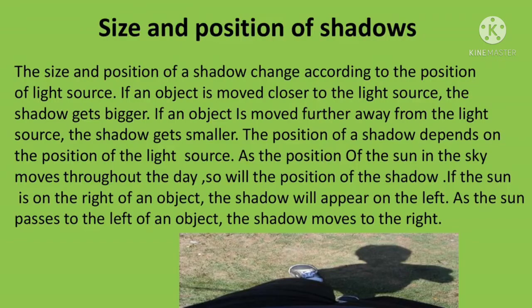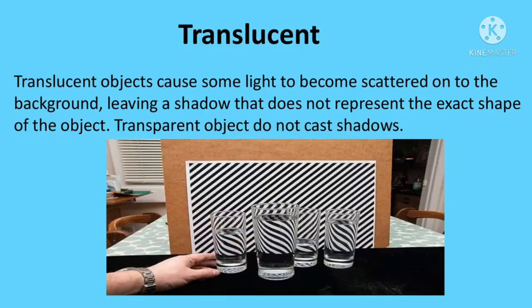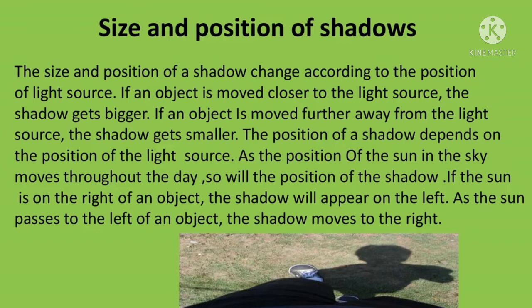The size and position of a shadow change according to the position of the light source. If an object is moved closer to the light source, the shadow gets bigger. If an object is moved further away, the shadow gets smaller. The position of a shadow depends on the position of the light source. As the sun moves through the sky throughout the day, so does the position of the shadow. If the sun is to the right of an object, the shadow appears on the left, and as the sun moves to the left, the shadow moves to the right.